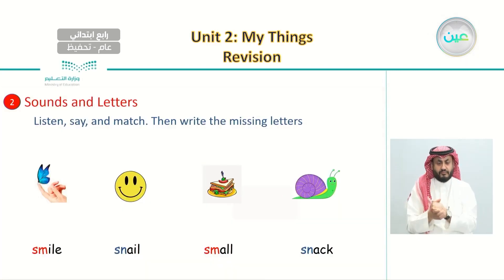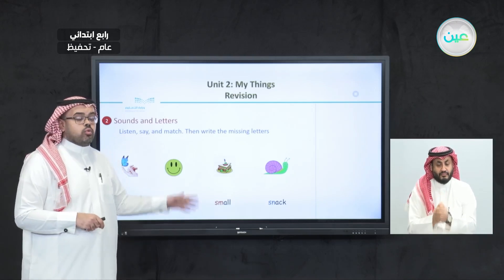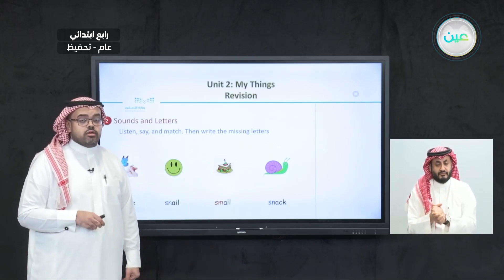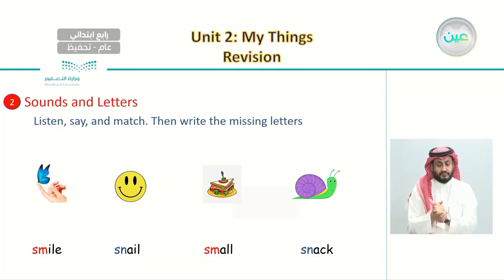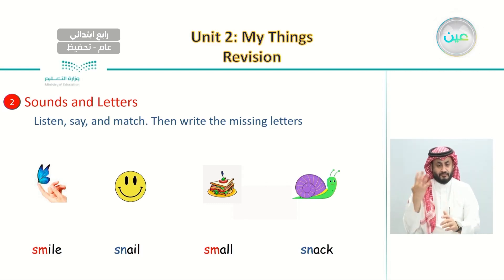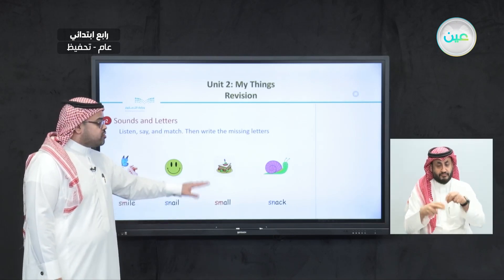After this, we did sounds and letters — we listened to four different words, two starting with SM and two starting with SL. We listened to these words and matched them with pictures. The four words are: smile, snail, small, and snack.